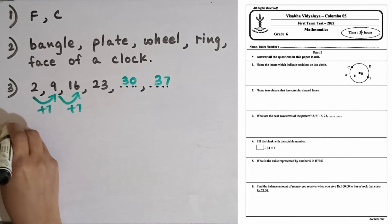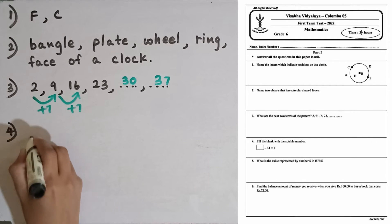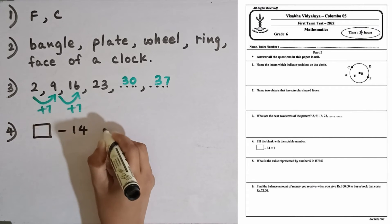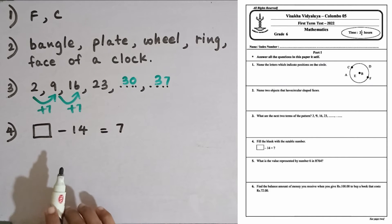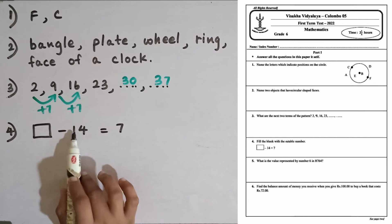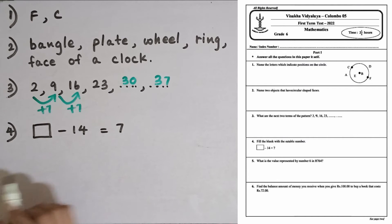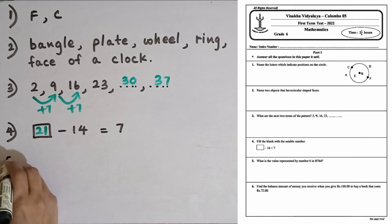Question number four: fill in the blank with the suitable number. We are given an empty box, then minus 14 equals 7. To find the number for the empty box, we have to add 14 and 7. 14 plus 7 is 21, so we write 21 for the empty box. 21 minus 14 is 7.